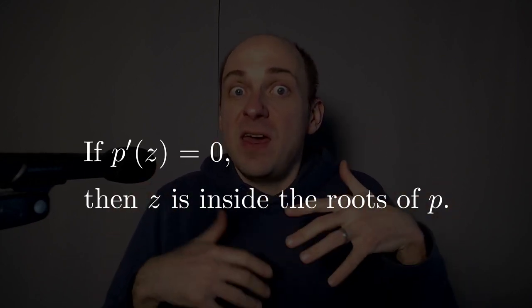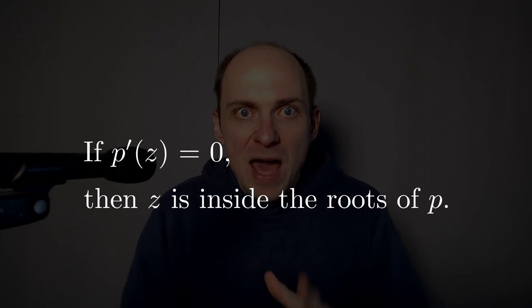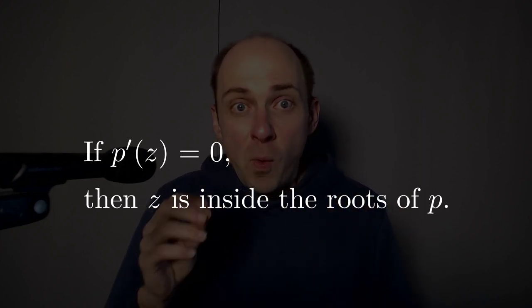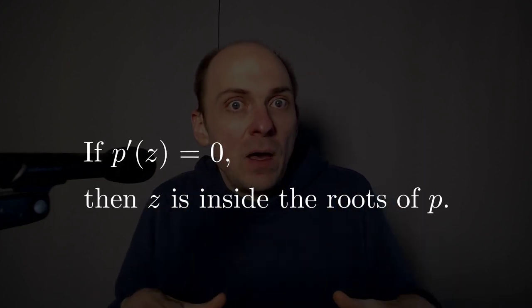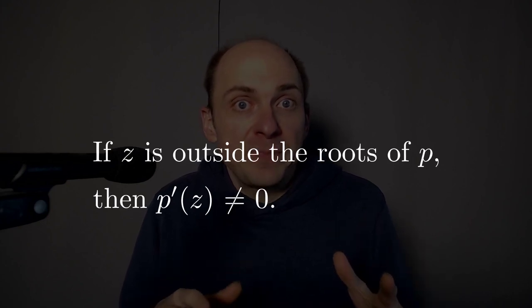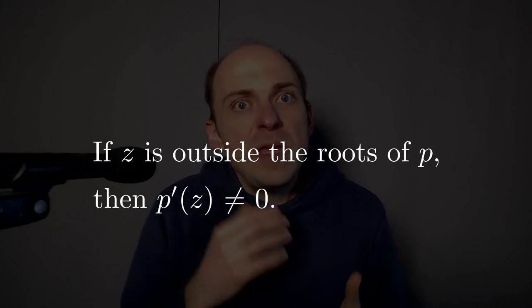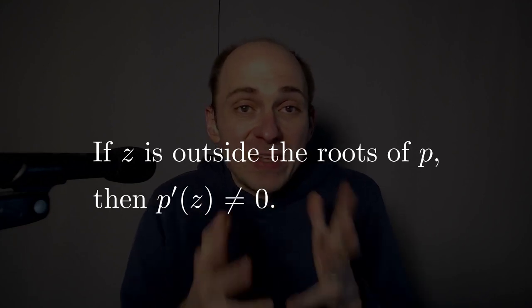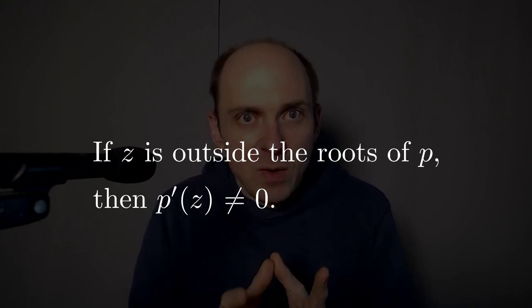I'm actually going to prove the contrapositive, an equivalent statement. So instead of proving that, we're going to show that if a point z is outside of the roots of the polynomial p, then z isn't a root of the derivative. Then p prime of z is not zero. That's equivalent to our original statement.